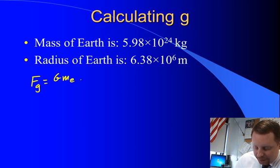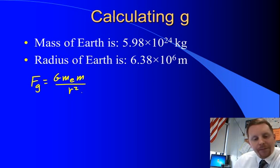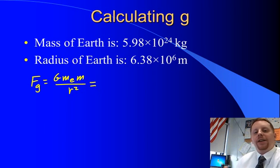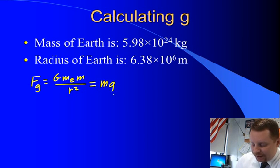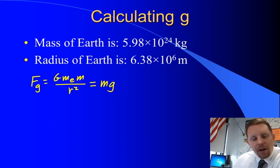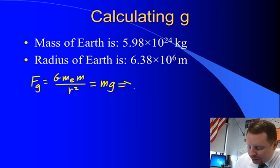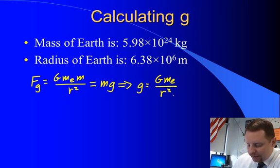We can use the equation Fg equals big G, mass of the Earth times the mass of our object over the square of the distance between them. But we also know that this is equal to M A by Newton's second law, and in this case, our acceleration A is the acceleration due to gravity. So that's equal to M g. With a little bit of rearrangement, we can show that little g must equal big G times the mass of the Earth over the square of the radius of the Earth.